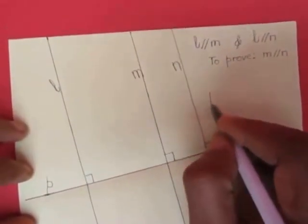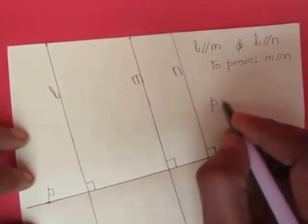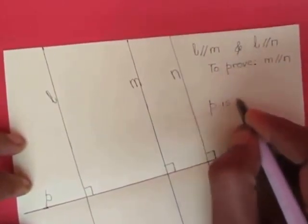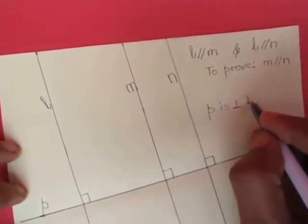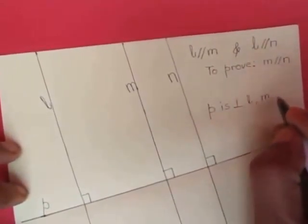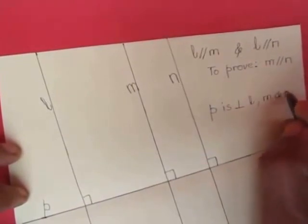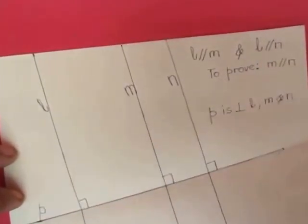Now if we fold the paper across the lines such that the back lines overlap the front lines exactly, we can see that the lines m and n are also parallel. This is because the fold which cuts the parallel lines is perpendicular to the parallel lines.